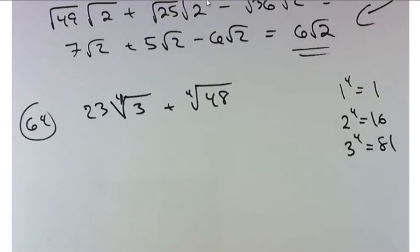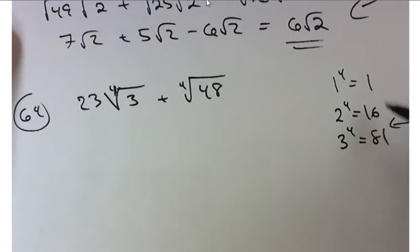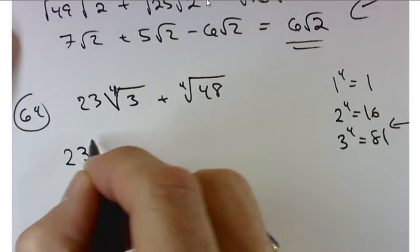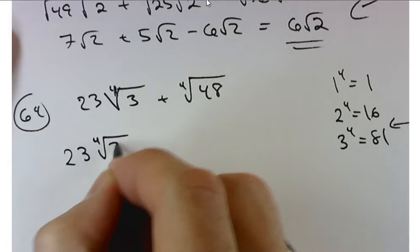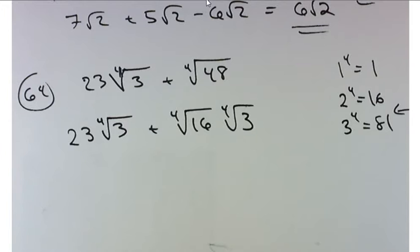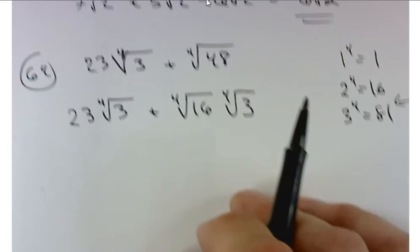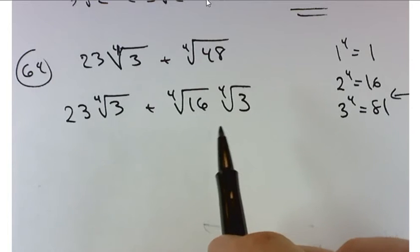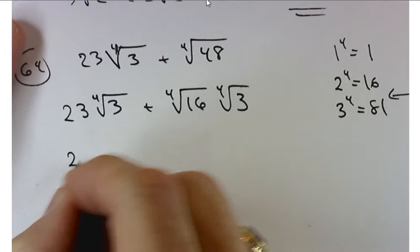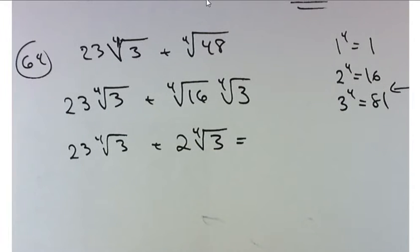48 lies between these two numbers. Does 16 go into 48 evenly? Good, it goes in there 3 times. So I'm going to rewrite this as the 4th root of 16 times the 4th root of 3. The idea here is that we can simplify that first radical. What would the 4th root of 16 equal? 2. So I end up with 2 times the 4th root of 3. Combine like terms. Thank you, 25 times the 4th root of 3.